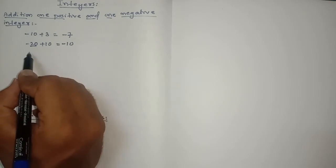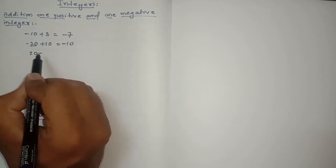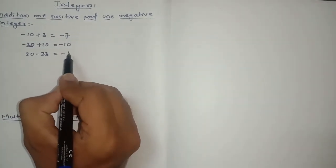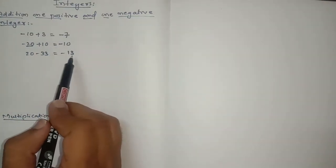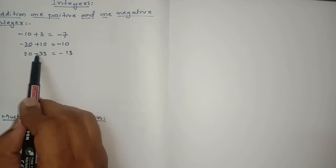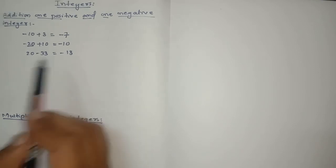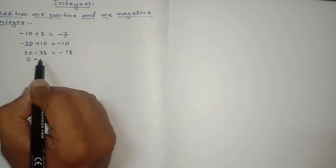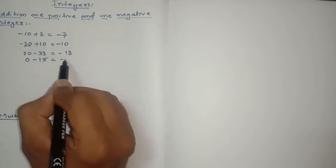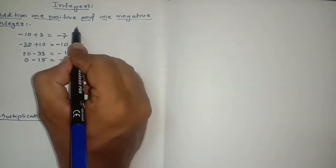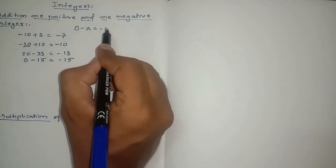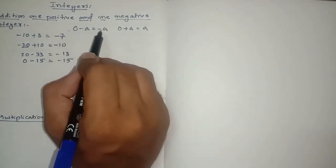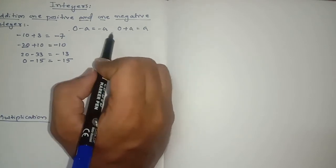Suppose if it is 20 minus 33. When you subtract 33 and 20 you get 13. The sign is minus because the sign of the bigger number is minus, so the answer is minus 13. If it is 0 minus 15, the answer will be minus 15. Keep in mind: 0 minus anything is minus that value; 0 plus anything is plus that value; and anything plus 0 remains the same.